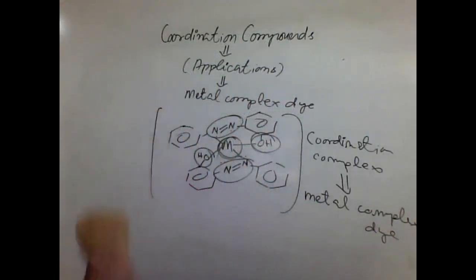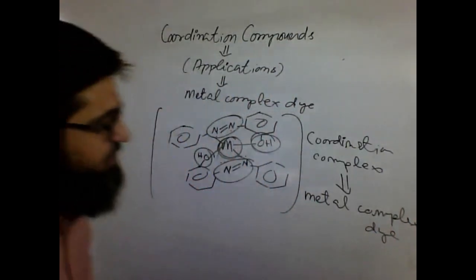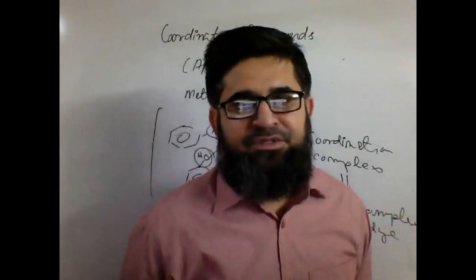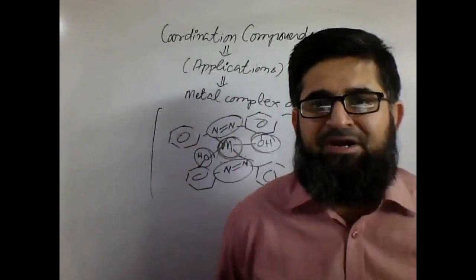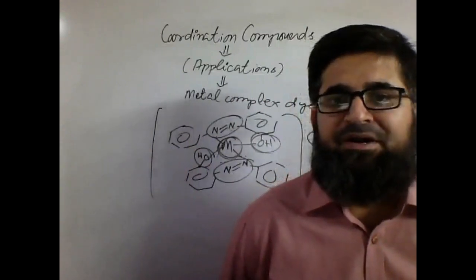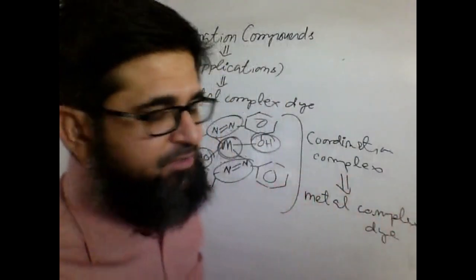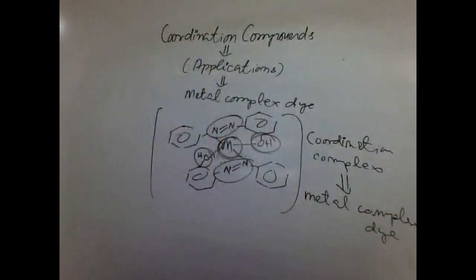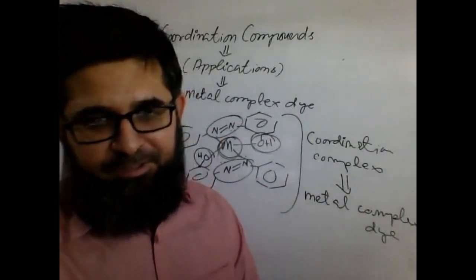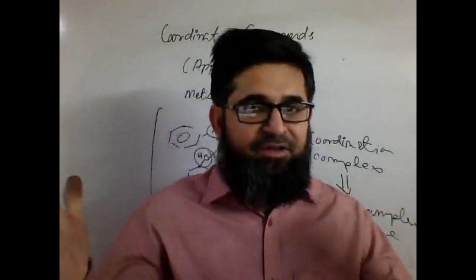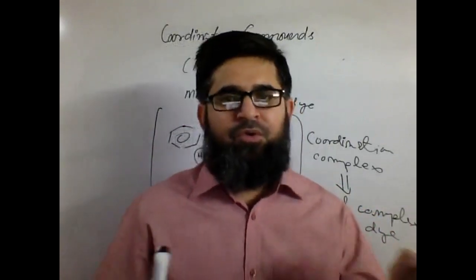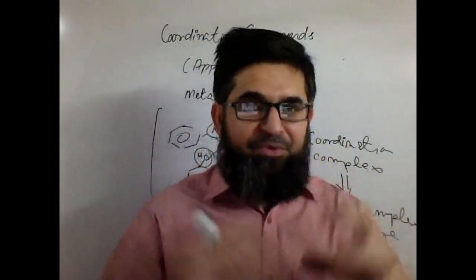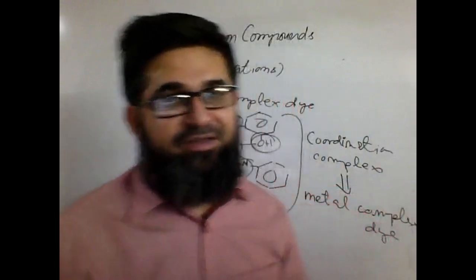This is how coordination compounds and organometallic compounds have been used for the preparation of metal complex dyes — metal-based dyes. In azo groups, the azo group carries nitrogens, and the nitrogens have the ability to generate lone pair donations. This is how they managed the preparation.